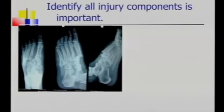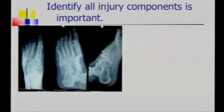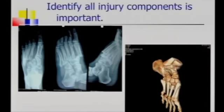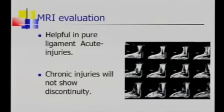Once you identify a Lisfranc injury, let us identify all the components as Dr. Alistair had already told you. Think of it like radius and ulna — if the radius is injured, do not forget to look at the ulna. Similarly, if one component is disrupted, do not forget to look at the other components. If the first and second are obvious, do not hesitate to look at 3, 4, and 5 — even they may be dislocated. So identify all the components. MRI may help, but many times you need to read it carefully.